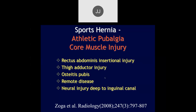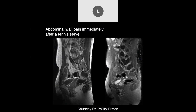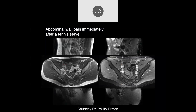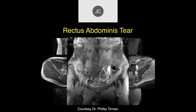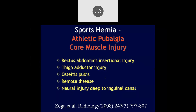You pick up the hematoma better on T2 than T1, usually. Let's now talk about sports hernias or athletic pubalgia — now the preferred term is core muscle injury. These are typical injuries that present as groin pain, around the insertion of the rectus abdominis, the thigh adductor muscles, and osteitis pubis. It can also be remote disease including more traditional hernias, and neuroinjury to the deep inguinal canal can occur and lead to prolonged symptoms.